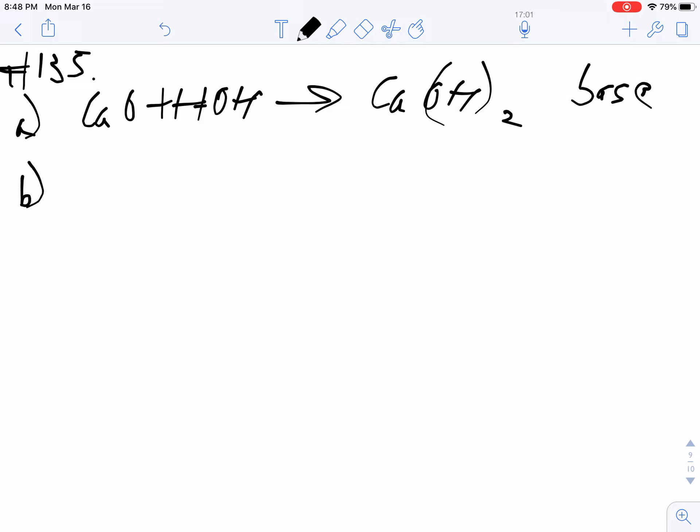When you put sulfur dioxide - SO2 is a non-metal, calcium oxide is a metal, but sulfur dioxide is a non-metal - when you put a non-metal in water, you are going to produce an acid.